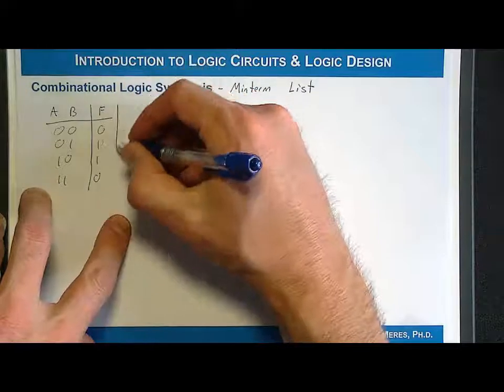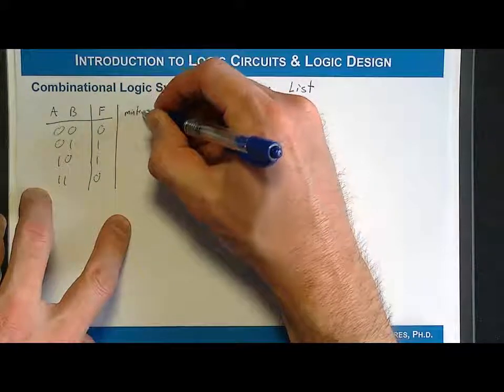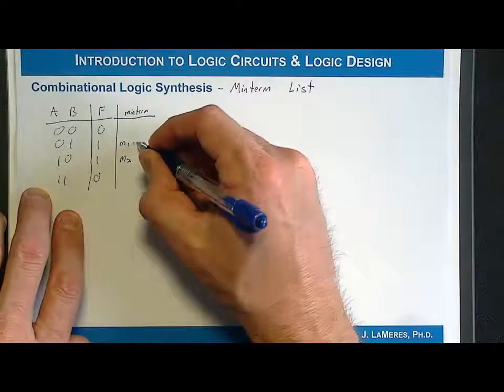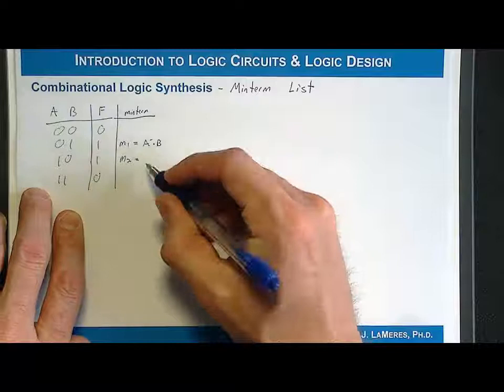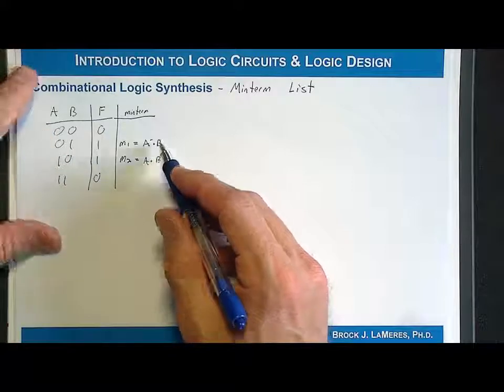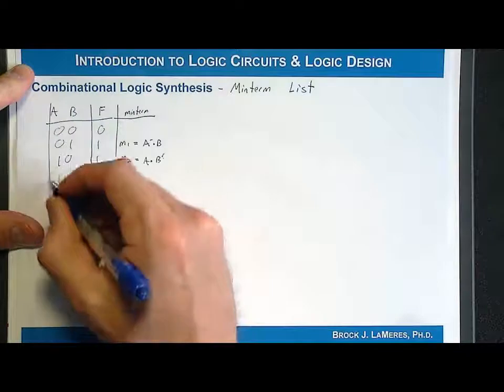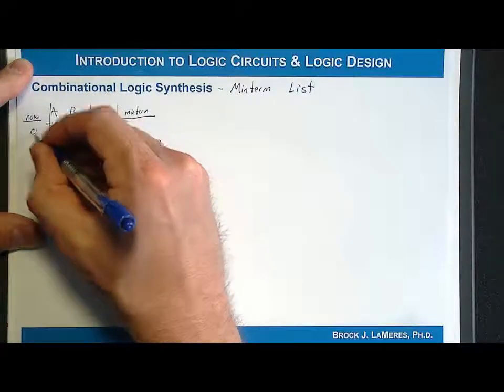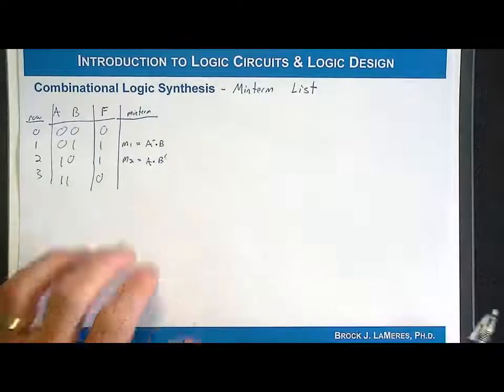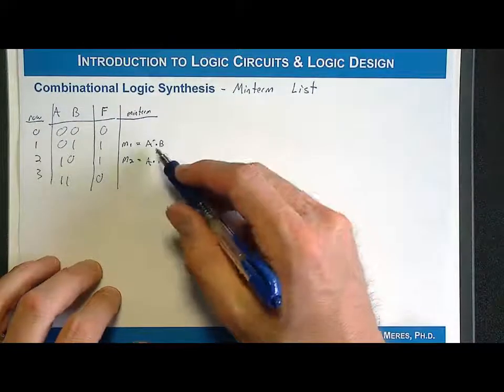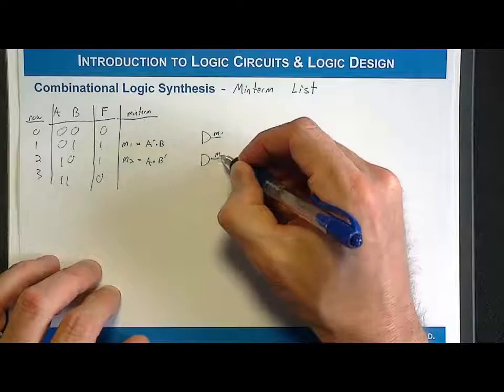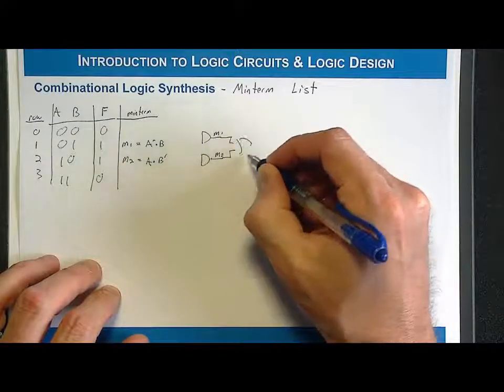We can write a minterm for each and every output that corresponds to a 1. So we can write a minterm for row 1 and row 2, which would be A' · B and A · B'. These two minterms are product terms that assert for one and only one input code. The subscripts come from the row numbers 0, 1, 2, and 3. With these minterms, we put them into a sum of products logic expression where they're OR'd together to produce this truth table.